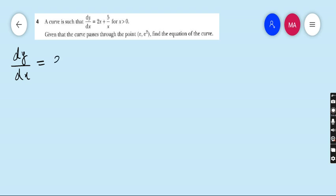Move to question number 4. A curve is such that dy by dx equals to 2x plus 5 upon x, for x greater than 0. Greater than 0 means x cannot be 0, because if x is 0, the function is undefined. Given that the curve passes through the point e, e square, find the equation of the curve. Very easy question.